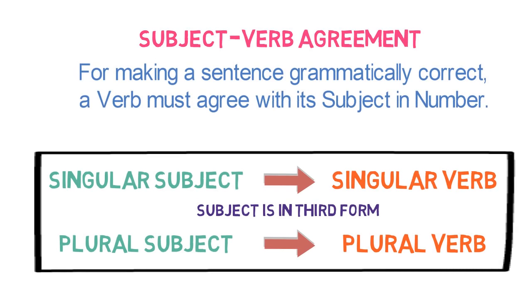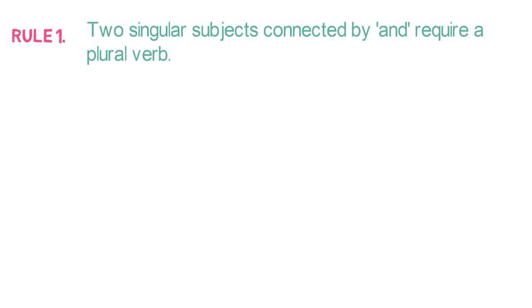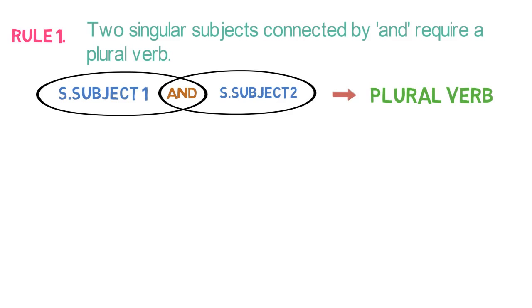Now, apart from this general rule, there are some tricky cases. For those tricky cases, we have defined some rules. So now we will learn those rules. Let's start with Rule number 1. Rule number 1 says: two singular subjects connected by AND require a plural verb. I will try to explain this rule with a simple diagram. Here singular subject 1 is joined with singular subject 2 by AND, so it requires a plural verb.